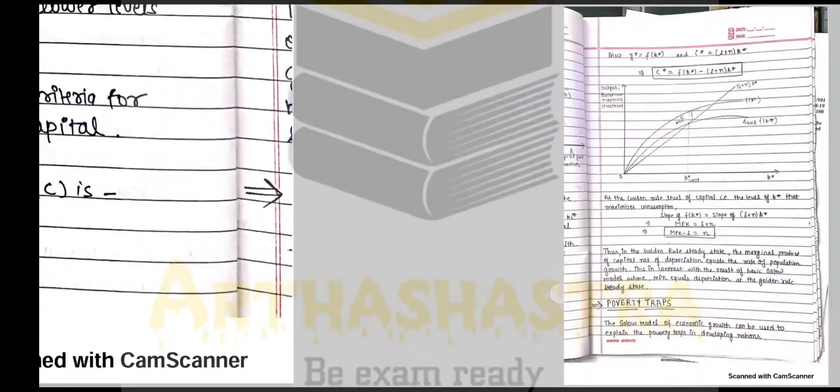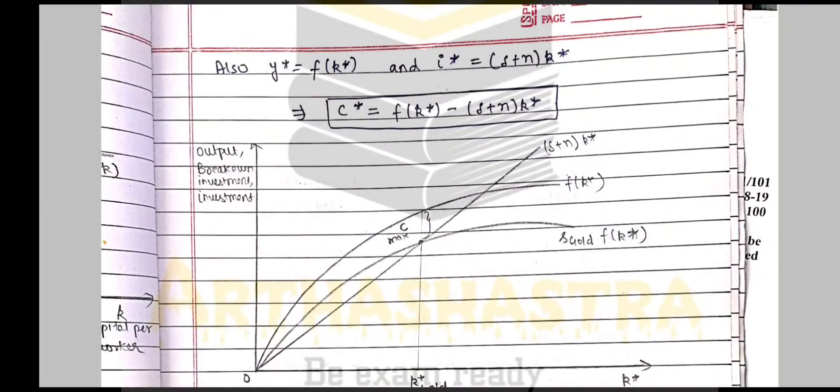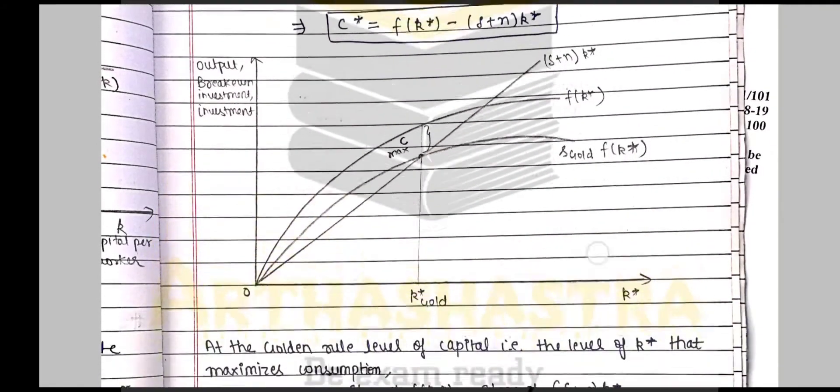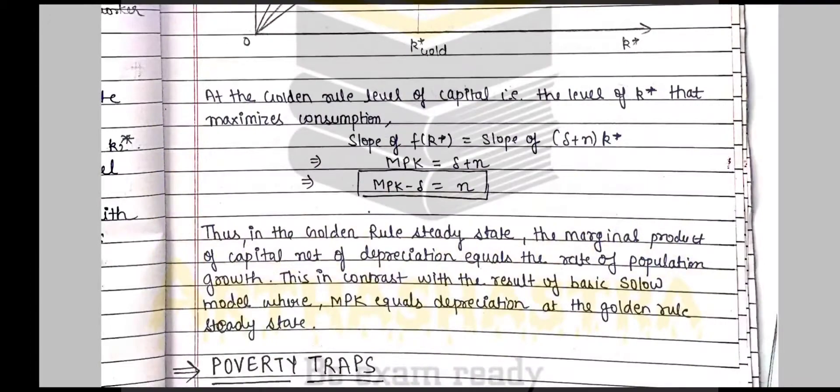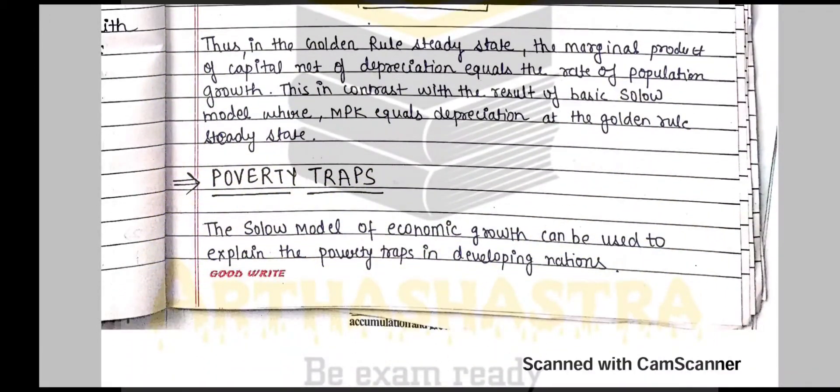And now we are seeing how we can determine the golden rule of capital when there is population growth in the economy. So we derive the condition as MPK minus depreciation equals the population growth.